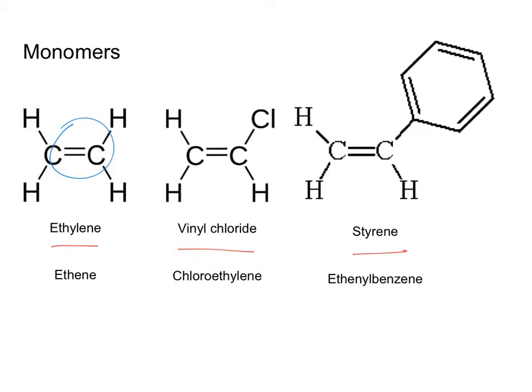However, there is value in knowing these older names such as ethylene, vinyl chloride, and styrene. The reason for that is because these monomers and the polymers made from them will often be referred to using these old names in secondary sources. So it is valuable to internalize and make sure that you remember those old names for some of these molecules in the chemistry course.